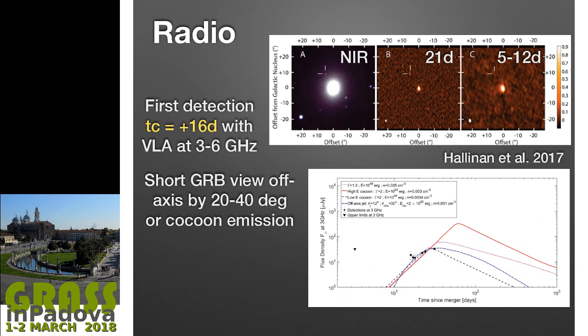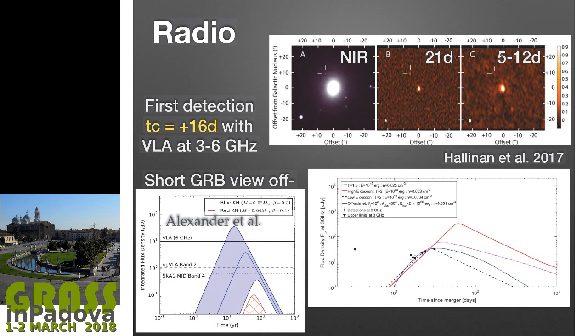Information on the same subject comes from radio observations, also detected sometime later—the first observation at 16 days. There are predictions for the future evolution of this emission. The light curves look similar, but the timescale spans days to years and depends a great deal on the environmental situation.